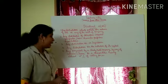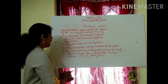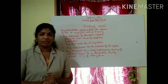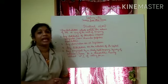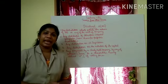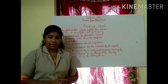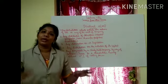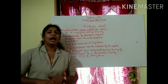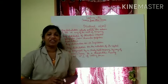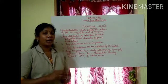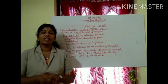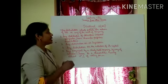And the last one is any payment made by a closely held company by way of advance or loan to a shareholder having at least 10% of voting power. A closely held company is one in which the public are not substantially interested. The company provides advances to shareholders having at least 10% voting power.